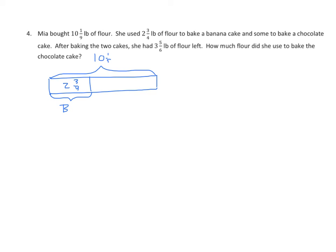And we have the banana cake where she used 2 and 3 fourths. We'll call that the banana cake, B. And then she baked a chocolate cake, and we don't know how much she used. And finally, she had some flour left over. We'll put an L there.